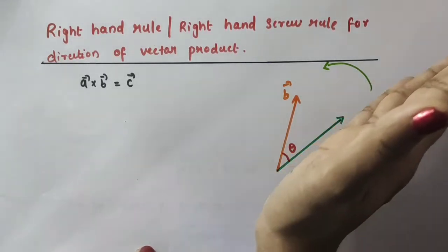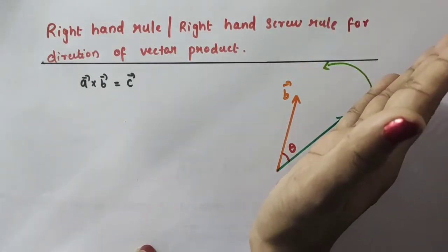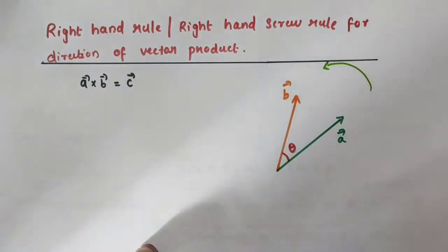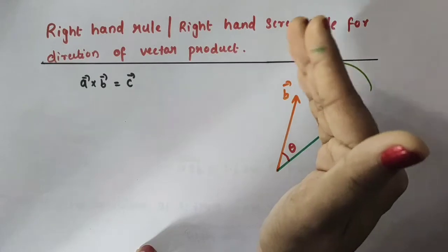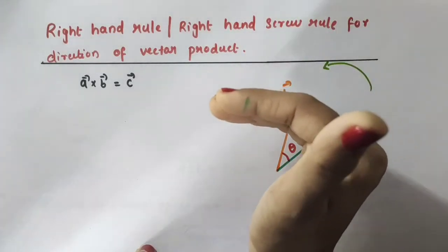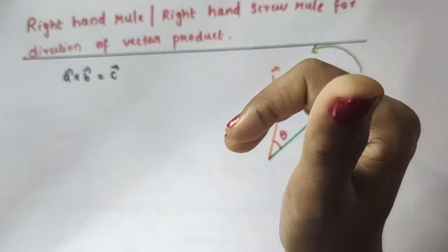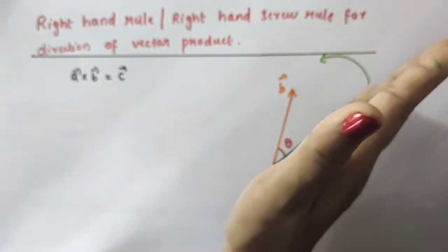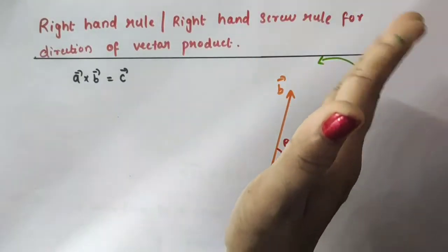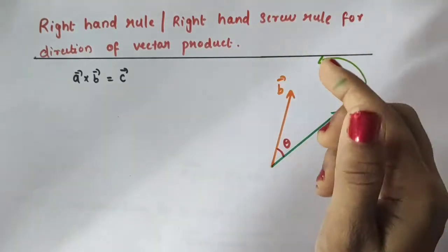Then curl the four fingers pointing from vector A to vector B. We curl them in the anti-clockwise direction through the small angle theta, from vector A to vector B. When we curl our fingers this way, the stretched thumb points in the direction of vector C.